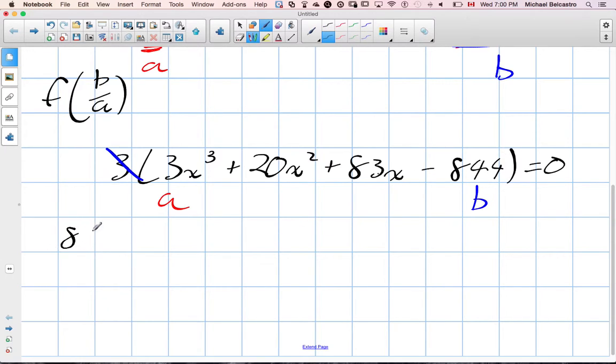Factors of 844 are 1, 844; 2, 422; and 4, 211. And then it's technically plus and minus all of these values.